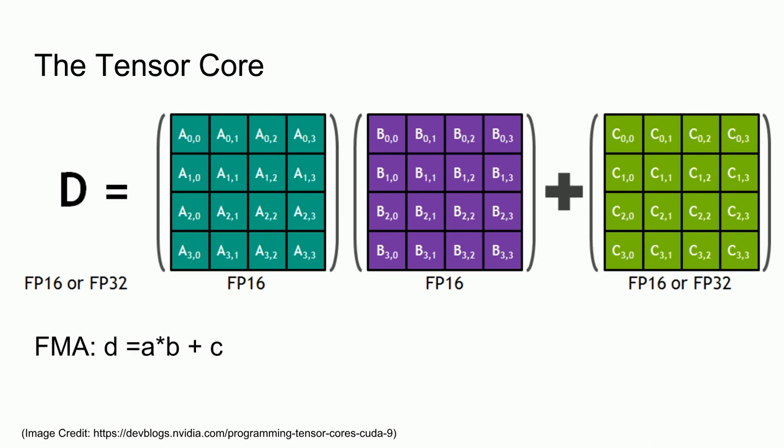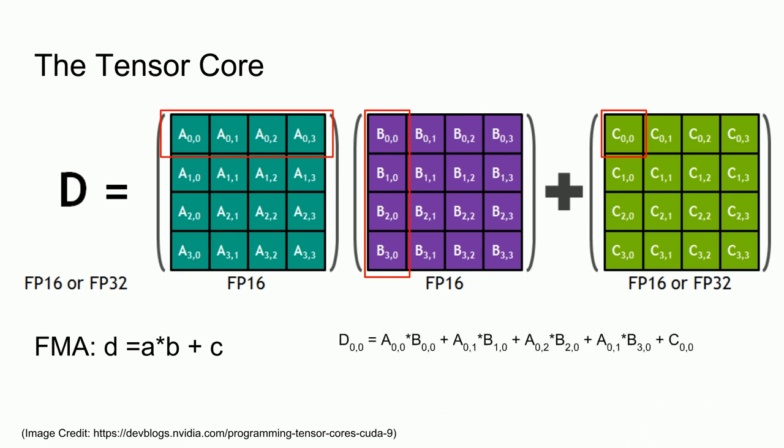However, things become a bit more complicated when dealing with matrix multiplication. For those of you who may have forgotten, matrix-matrix multiplication is done via row-by-column multiplication and summation. So the expression to compute the first element in D, D00, would be this, where this computation is done for all 16 elements of D simultaneously.